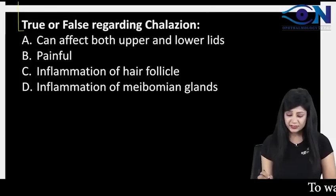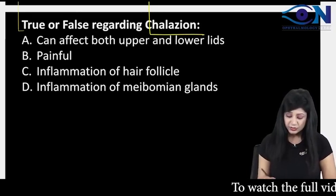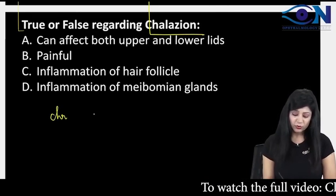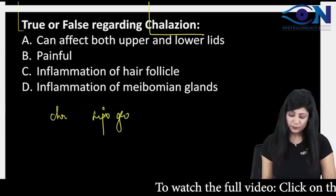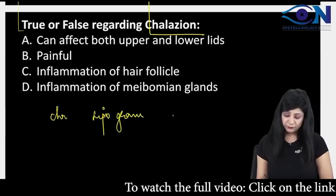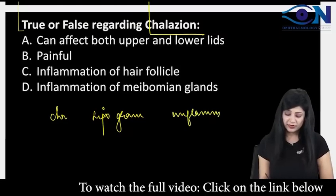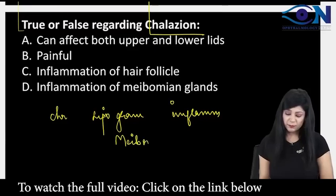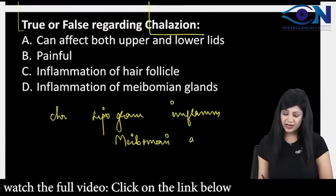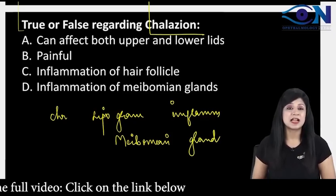True or false regarding the chalazion. If I am talking about the chalazion, chalazion is a chronic and lipogranulomatous inflammation of the meibomian gland. Because the meibomian gland is a sebaceous gland, it can lead to sebaceous cell carcinoma.